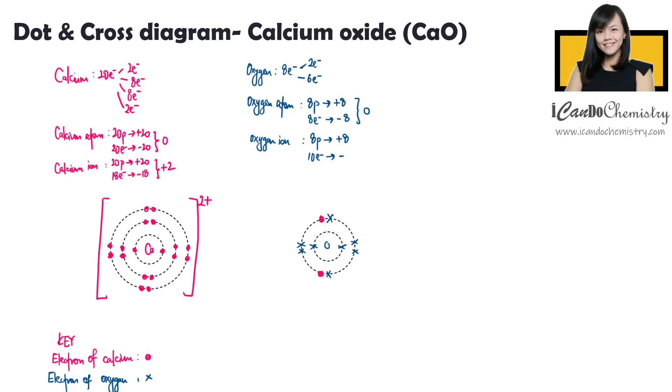Hence, the negative charge is negative 10. Overall charge in this oxide ion is negative 2. Put the bracket and the charge in the dot and cross diagram.